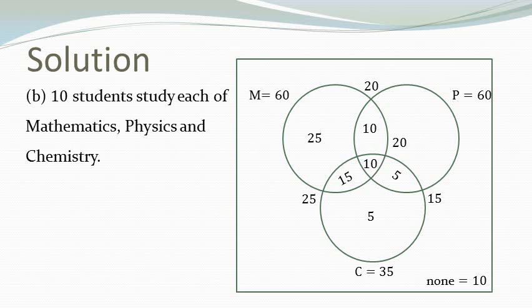The second option says 10 students study each of math, physics and chemistry. And that's correct because we found the value of x to be 10. So this one is true.